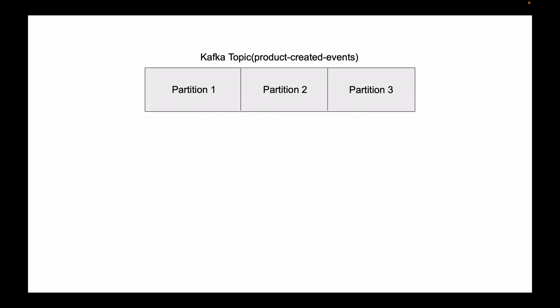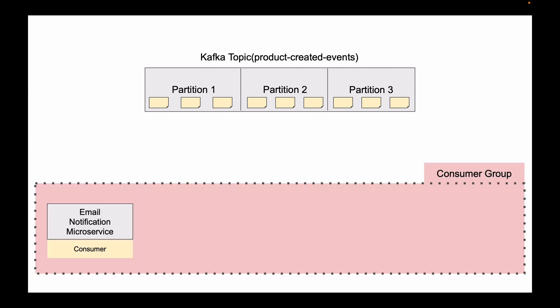Let's assume that we have a Kafka topic called Product Created Events. We created this topic with three partitions. All messages in this Kafka topic will be stored in these three separate partitions. To consume messages from this topic, we started one microservice called Email Notification microservice, which acts as a Kafka consumer. When we have only one consumer microservice, it will read messages from all three partitions in the topic.